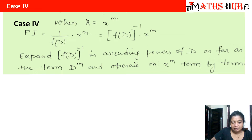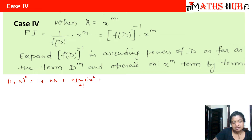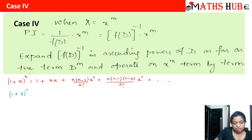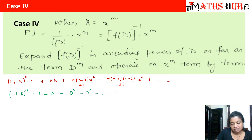We need the binomial expansion: (1 + x)^n = 1 + nx + n(n−1)/2! · x² + n(n−1)(n−2)/3! · x³ + … For example, (1 + D)^(−1) gives 1 − D + D² − D³ + …, since here x = D and n = −1, and every alternative term alternates sign.